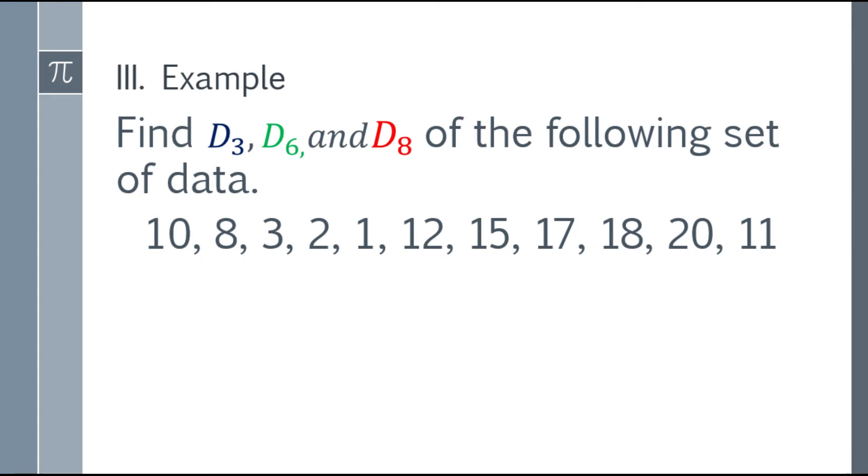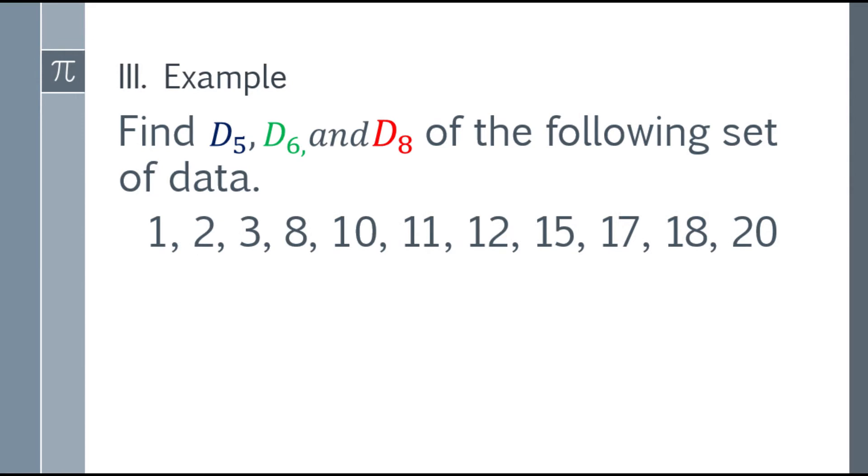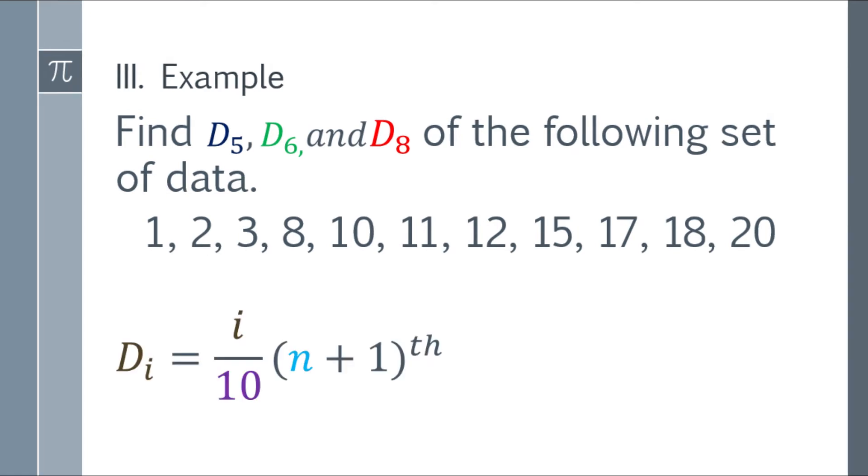So let's start with the example. Find D5 or 5th decile, D6, and D8 of the following set of data: 1, 2, 3, 8, 10, 11, 12, 15, 17, 18, 20. The first thing you will do is you have to arrange it in ascending order, from lowest to highest.